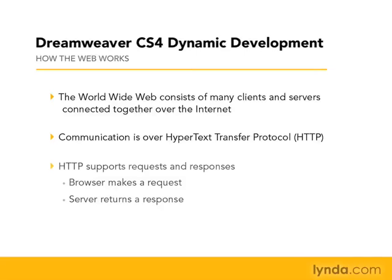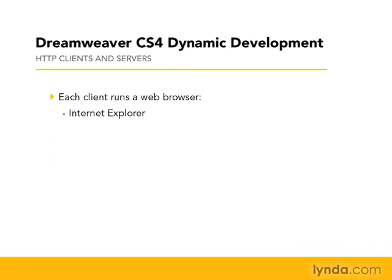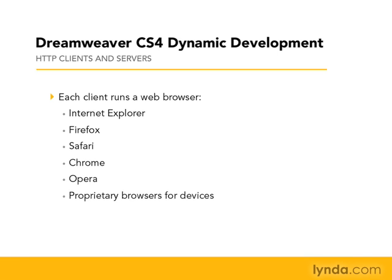The HTTP protocol allows requests to be sent from a browser and responses to be sent from a server. On a personal computer, to participate in the web, you need a web browser. Common web browsers include Internet Explorer, Firefox, Safari, Chrome, and Opera. And then there are many proprietary browsers available. You can also make requests for web resources over devices such as cell phones.